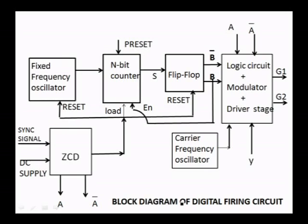It is a type of down counter. It starts counting from 2 to the power of n, which is the number of states. When it reaches the count value N, the output of the n-bit counter sets the flip-flop. The flip-flop has two outputs B and B-bar, and it drives the logic circuit, modulator, and driver stage. The output will be tiny pulses given to the gates of an SCR.